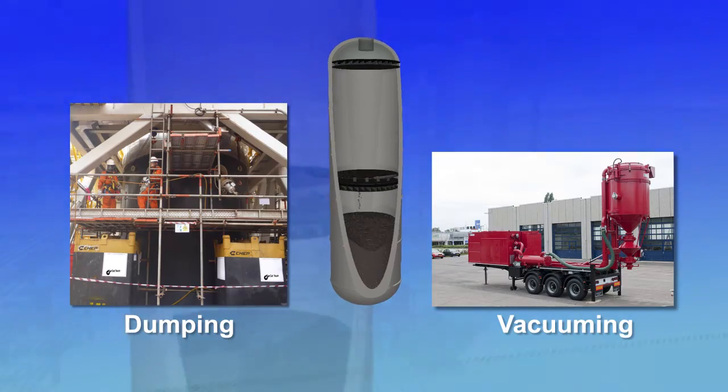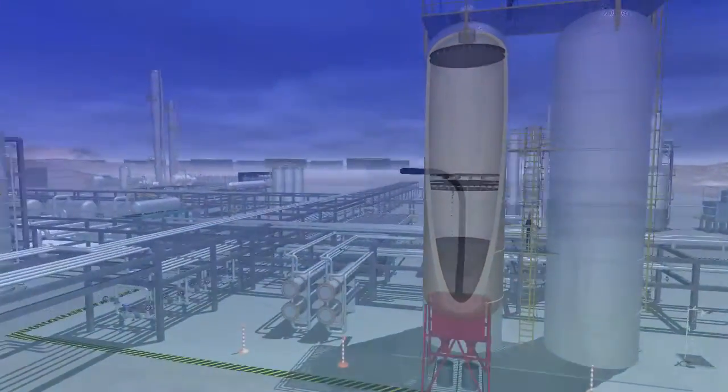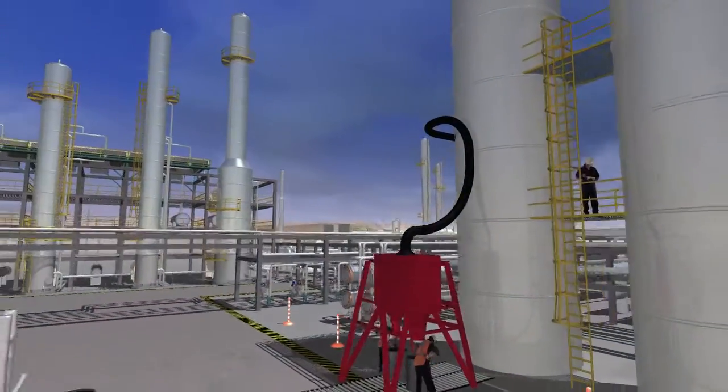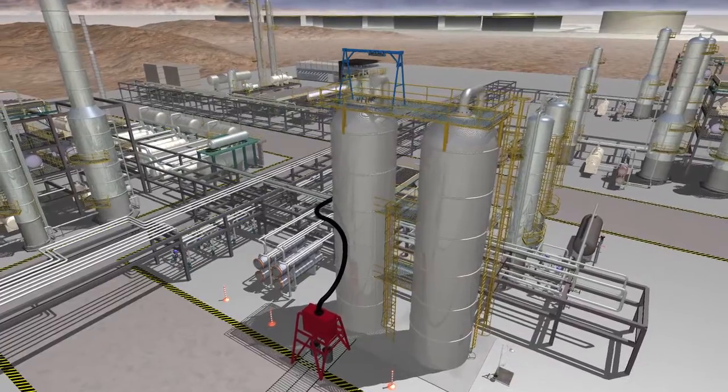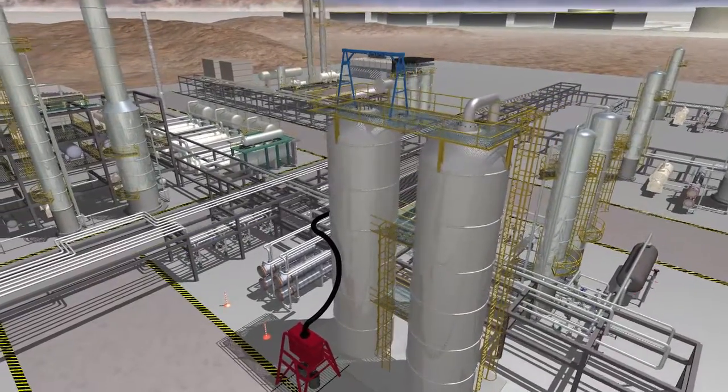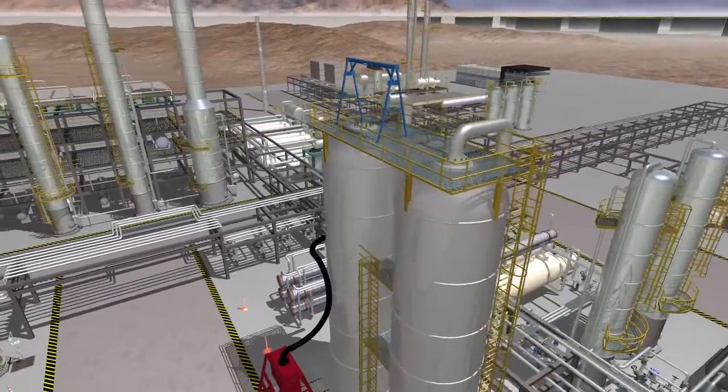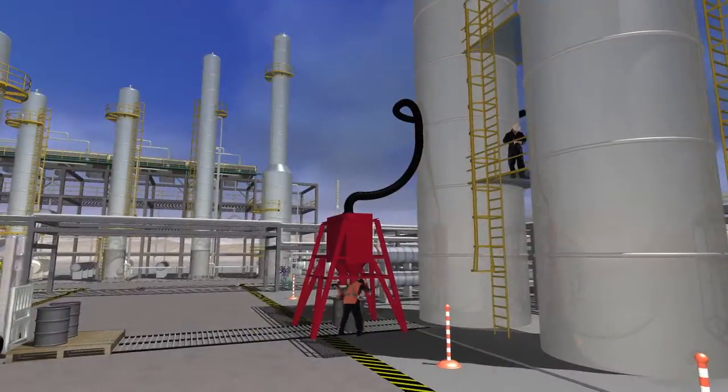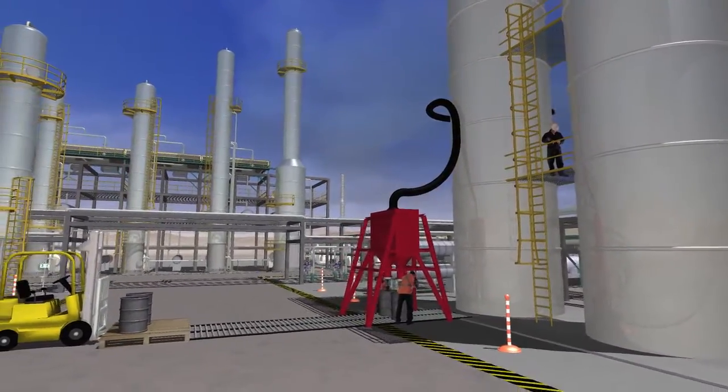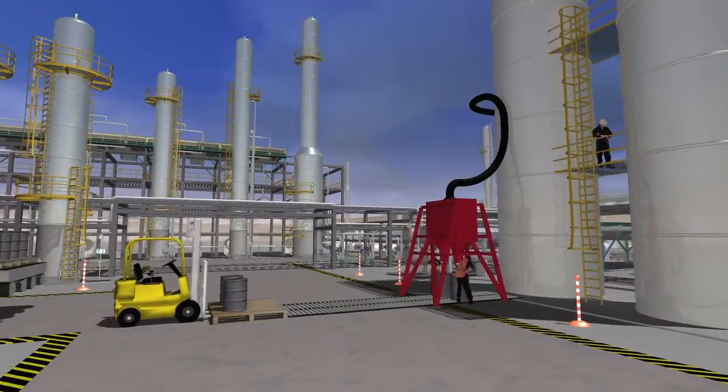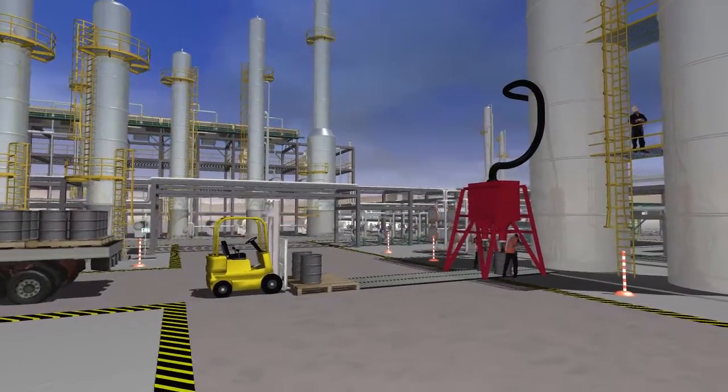The product can then be safely transported to off-site locations in bins or drums. The reactor is now ready for inspection and repairs. As CATNAP uses an organic chemical to coat the catalysts, the catalyst can be regenerated off-site by most regeneration facilities.